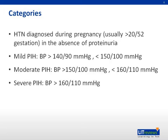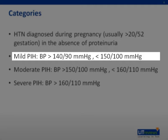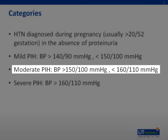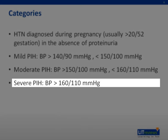Pregnancy-induced hypertension may be subdivided into mild, moderate, and severe categories. Mild pregnancy-induced hypertension is when the blood pressure is more than 140 systolic over 90 diastolic, but less than 150 systolic over 100 diastolic. Moderate pregnancy-induced hypertension is when the blood pressure is more than 150 systolic over 100 diastolic, but less than 160 systolic over 110 diastolic. Severe pregnancy-induced hypertension is when the blood pressure is more than 160 systolic over 110 diastolic.